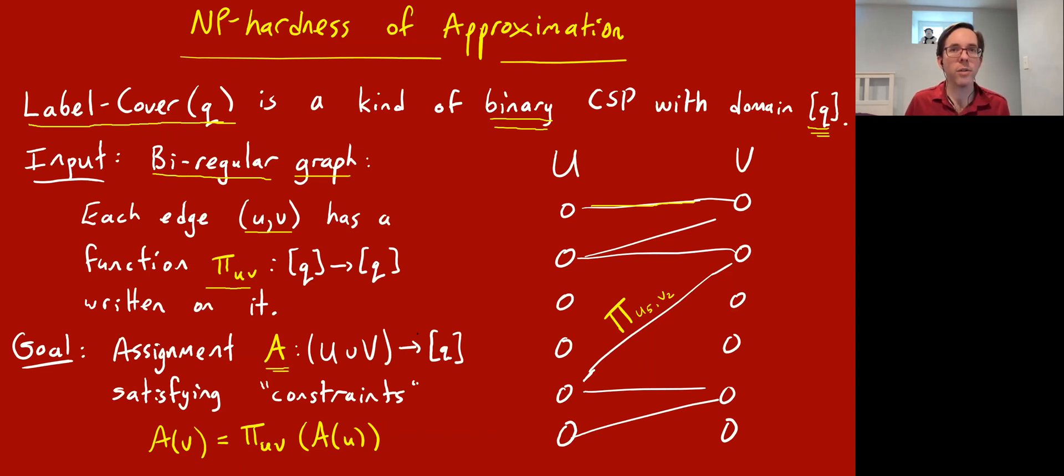As always, you're trying to find an assignment of domain elements, numbers 1 through q, to all the vertices u in U and V, and you want them to satisfy as many constraints as possible. What is the constraint? It's this kind of projection constraint from the U side to the V side. The meaning of this π is whatever value you give to, let's say, this vertex, like 6, that's a value between 1 and q. π is a function, so it maps 6 to something, maybe 3. And this constraint says you have to give this guy the value 3. So the constraint on edge uv is that whatever you assign to u, if you pass it through the π that's written on the uv edge, that's what you're supposed to assign to v. It's some kind of generalized graph coloring problem.